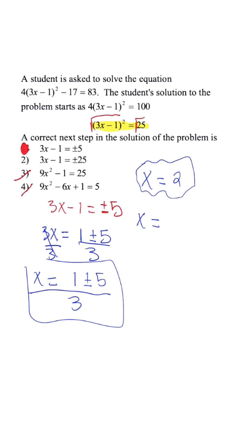And then the second x is 1 minus 5, which is negative 4, negative 4 divided by 3. We can't reduce that anymore, so it's going to stay as negative 4 over 3.